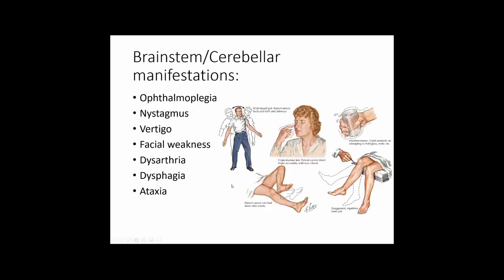Other brainstem and cerebellar manifestations of MS include inflammation and scarring of cranial nerve nuclei causing cranial nerve symptoms: ophthalmoplegia, diplopia, blurred vision — either from diplopia or optic neuritis — nystagmus (from internuclear ophthalmoplegia or vestibulocochlear nerve involvement), vertigo, facial weakness from seventh nerve nucleus involvement, and dysarthria and dysphagia from cranial nerve weakness.